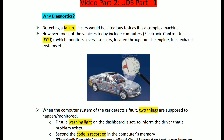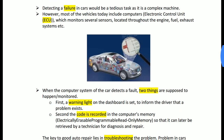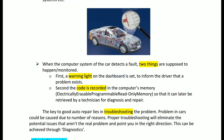Detecting a failure is a very complex task, so ECUs are used for that purpose. Whenever a fault is detected, two things happen: first, a warning light is illuminated on the dashboard so the driver can identify that a problem exists somewhere; second, a code is recorded in the computer's EEPROM — Electrically Erasable Programmable Read-Only Memory.